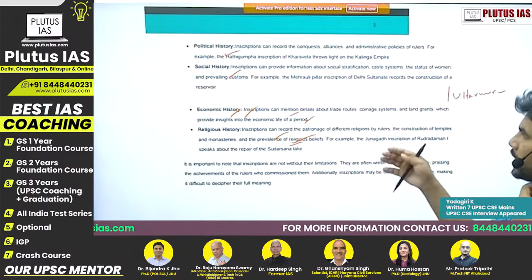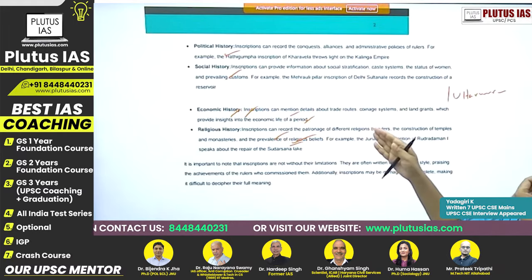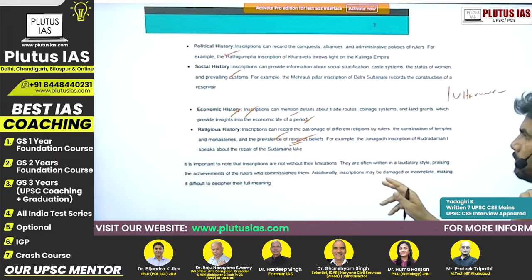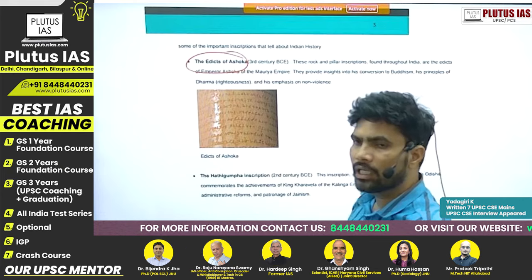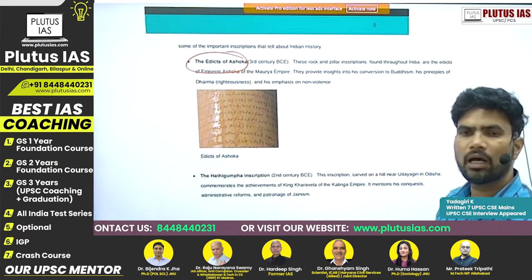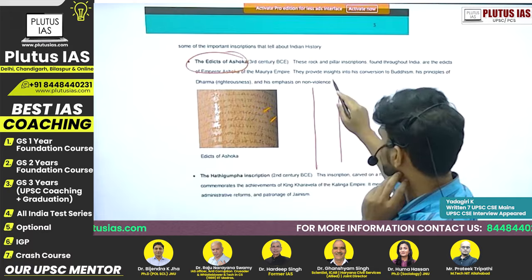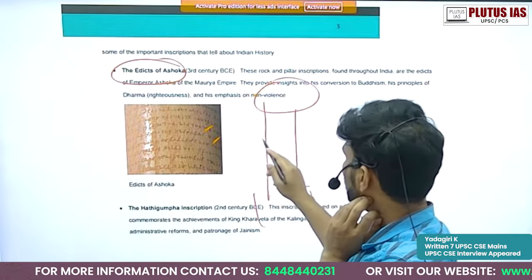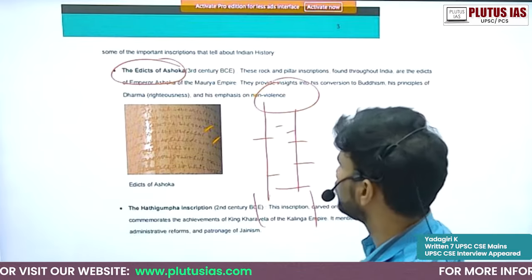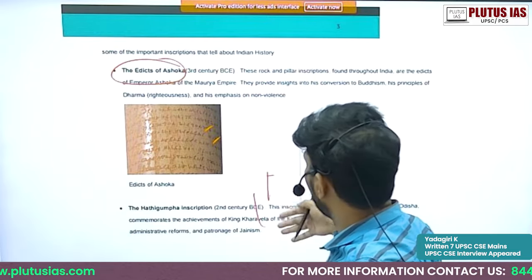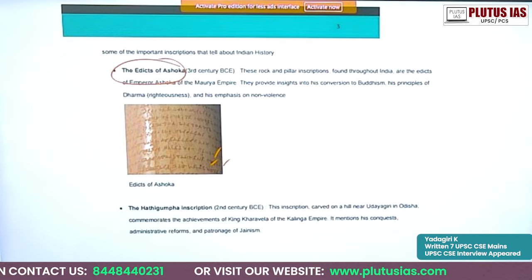With the examples we are going to study, you can substantiate all these points. You can quote one or two examples in an answer to make it a strong response. For instance, Ashokan edicts are inscriptions — though they are not Prashastis — carved on beautifully polished pillars in Brahmi script, providing insights into Ashoka's conversion to Buddhism, his principles of Dhamma, and his emphasis on non-violence.